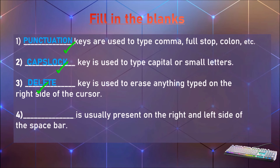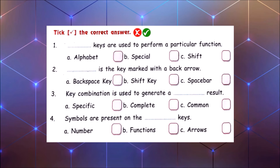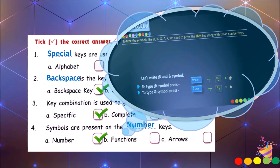Alt keys are usually present on the right and left side of the Space bar. Now tick the correct answer: Special keys are used to perform a particular function. Backspace is the key marked with a back arrow. Key combination is used to generate a specific result. Symbols are present on the number keys, which are marked with digits 1 to 9 and 0. To use these symbols, press the Shift key along with the number keys.